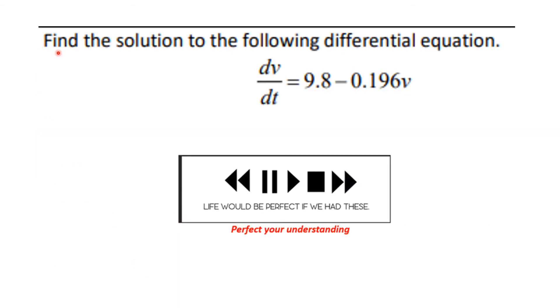Let's see how you can do with this. So, find the solution to the following differential equation: dy dt equals 9.8 minus 0.196 times v. Let's see how you did.